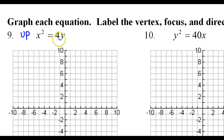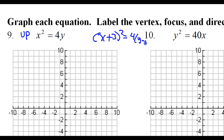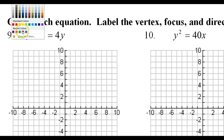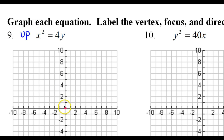See how it's just x squared and y? There's no x plus 3 squared or 4 times y minus 1. That means the vertex must be 0, 0. The vertex is 0, 0.